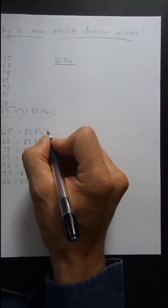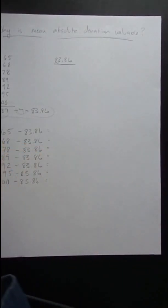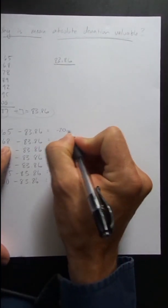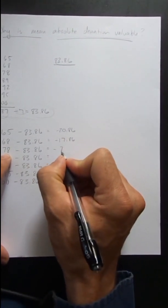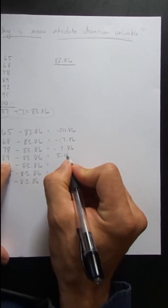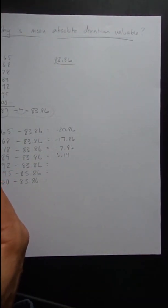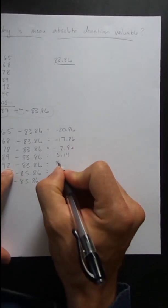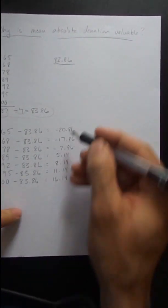And what we get is negative eighteen point eight six, negative fifteen point eight six, negative five point eight six, five point one four, eight point one four, eleven point one four, and sixteen point one four.